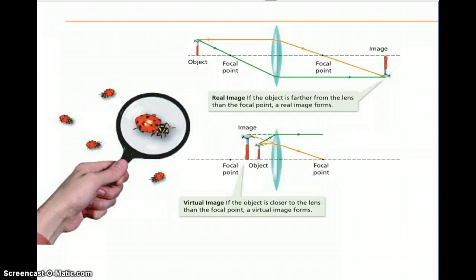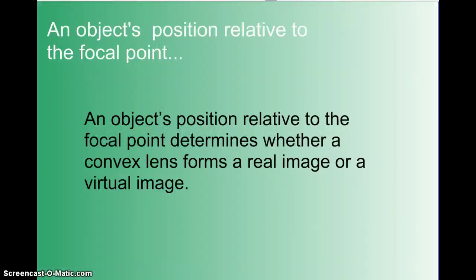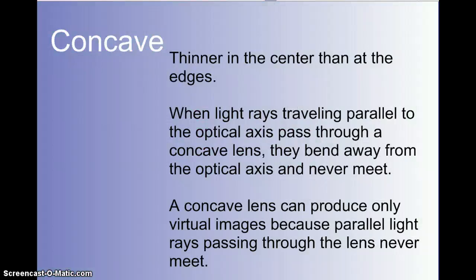So, difference between a real image and a virtual image. If the object is further away from the lens than the focal point, it is a real image. The real image is formed. However, if the object is in front of the focal point, it looks closer than it actually is. It's not a real image, it's a virtual image. That's why things look bigger in, say, like magnifying glasses. It's not the real thing going on. It's a virtual image. An object's position relative to the focal point determines whether a convex lens forms a real image or a virtual image.